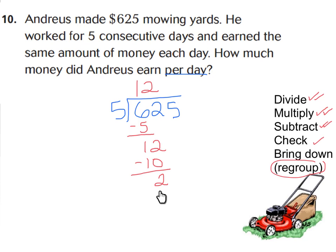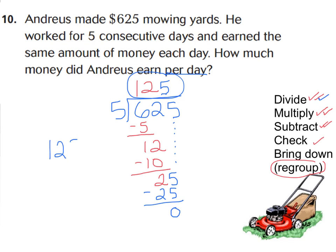Now bring down the ones place — bring down this 5. Now we have 25 ones. Go back to step 1: divide the ones. If I have 25 units and divide into 5 groups, 25 divided by 5 is 5. Multiply: 5 times 5 is 25. Subtract to see if there's any left — nothing left over. Therefore, he made $125 per day. That answer is reasonable: 125 times 5 is a total of $625.